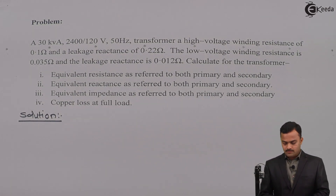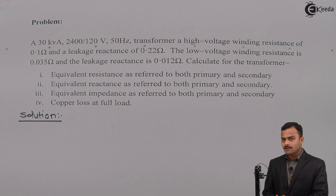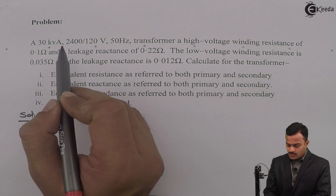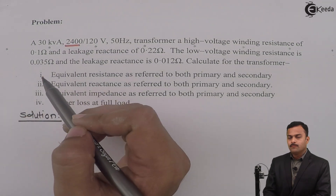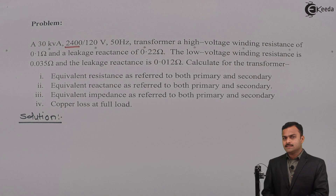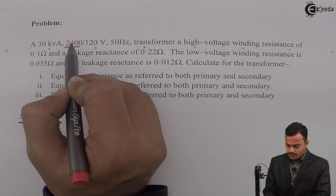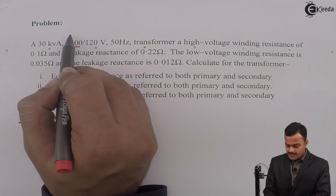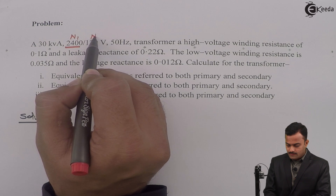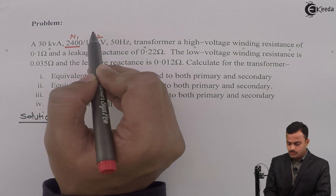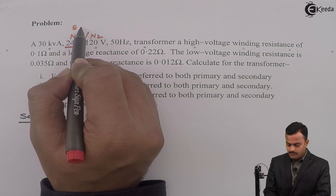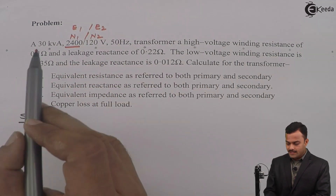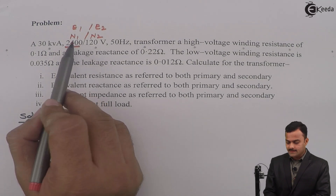Before solving the problem, I would like to draw the equivalent circuit of the transformer with the given values. First, check whether the primary is a low voltage or high voltage winding. The primary is the first voltage given, and since 2400 is greater than 120, the primary is the high voltage winding. So N1/N2 ratio equals E1/E2, and the high voltage winding is the primary.